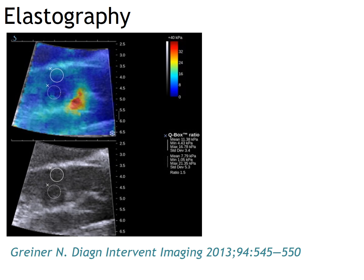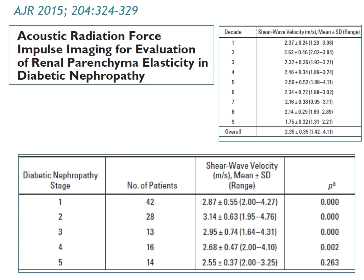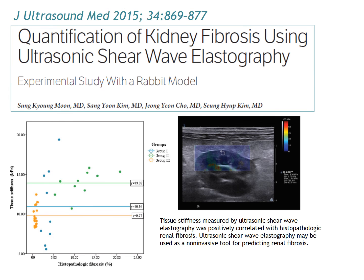Elastography may be used to evaluate renal parenchymal diseases. One example study measures shear wave velocity in normal volunteers grouped by age and in a diabetic nephropathy group by stage. An animal study by our group compares degree of fibrosis and tissue stiffness measured by shear wave elastography.